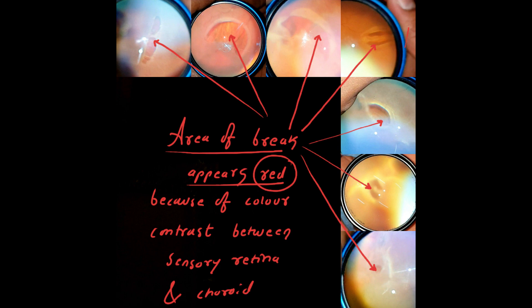As you can notice in all these lesions, the area of the break appears red because of color contrast between the sensory retina and the underlying choroid.